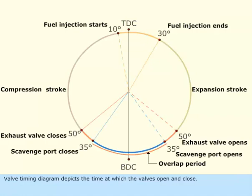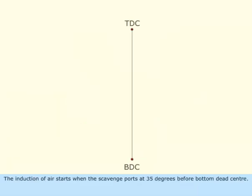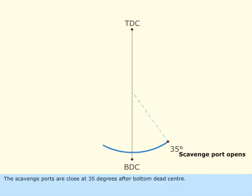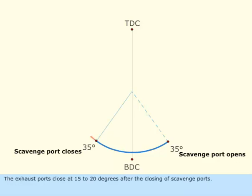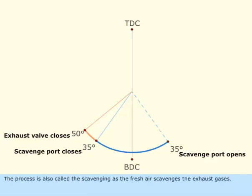The valve timing diagram depicts the time at which the valves open and close. The induction of air starts when the scavenge ports open at 35 degrees before bottom dead center. The scavenge ports are closed at 35 degrees after bottom dead center. The exhaust ports close at 15 to 20 degrees after the closing of scavenge ports. This process is also called scavenging, as the fresh air scavenges the exhaust gases.